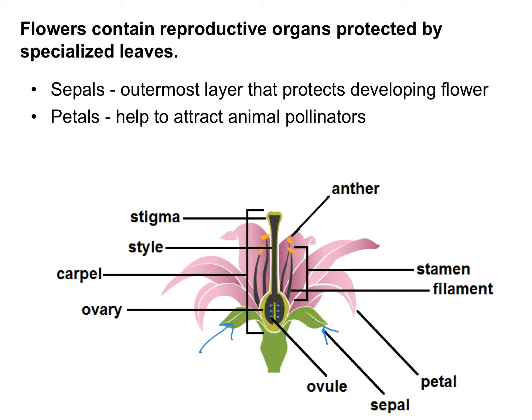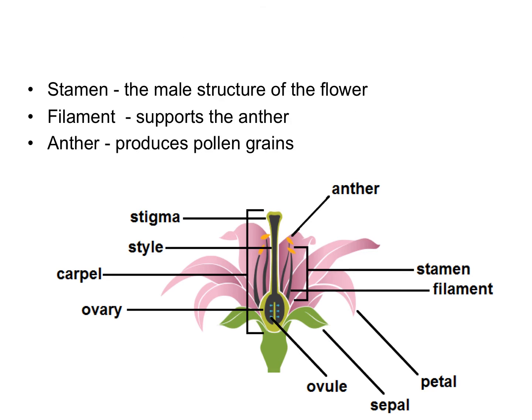Moving on to petals — petals are brightly colored to attract animal pollinators. That's also why flowers have a scent, to attract those pollinators as well. Most flowers have both male and female parts, like the one you're looking at in this diagram. Some have one or the other, but for our purposes we're going to focus on flowers that have both male and female parts.